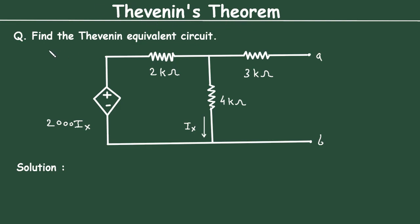Thevenin's theorem question: find the Thevenin equivalent circuit. For this circuit we have to find its Thevenin equivalent circuit. As we can see, this circuit consists of a dependent source. So this is the problem on Thevenin's theorem with a dependent source.